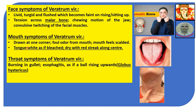Mouth symptoms of Veratrum Viride: drawn at one corner, foul odour from mouth, mouth feels scalded, tongue as if bleached, dry with a red streak along the centre. This characteristic red streak along the centre of the tongue is a notable feature of Veratrum Viride.